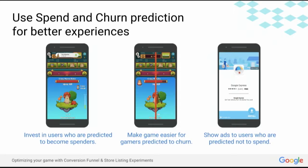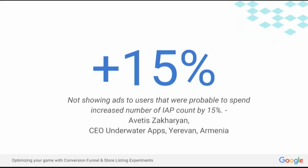Here are three simple ways to use spend and churn prediction for better experiences. You can invest in users who are predicted to become spenders. You can make the game easier for gamers predicted to churn. Or you can show ads to users who are predicted not to spend otherwise. Underwater Apps implemented the PlayerStats API to predict spend behavior of newly acquired users. They didn't show ads to users who were probable to spend, and this simple change increased IAP count by 15%.